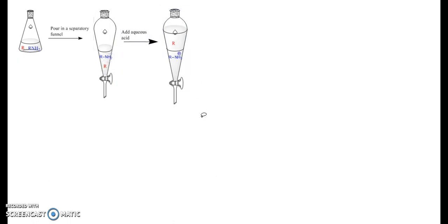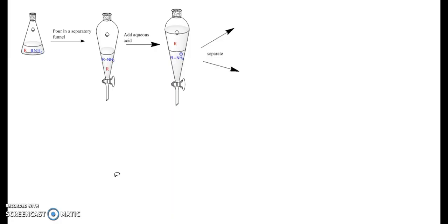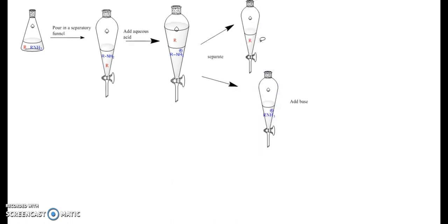Also notice that our amine has been protonated by the acid, so it's now much more polar—it's a cation—and it's soluble in the aqueous phase rather than the organic phase. We're going to separate our two layers now, so that we have one fraction with just our neutral compound and one with our protonated basic compound.